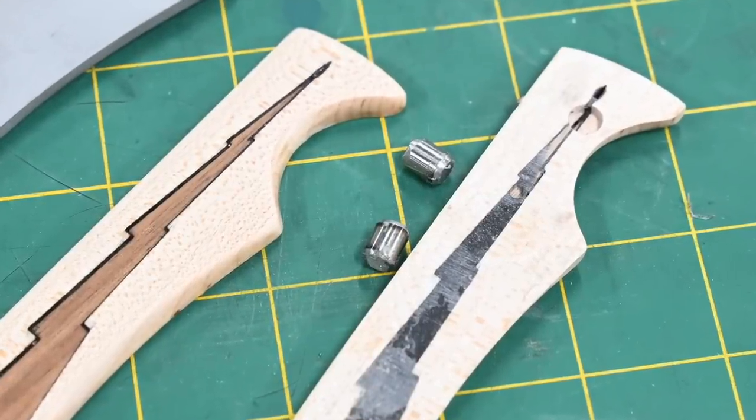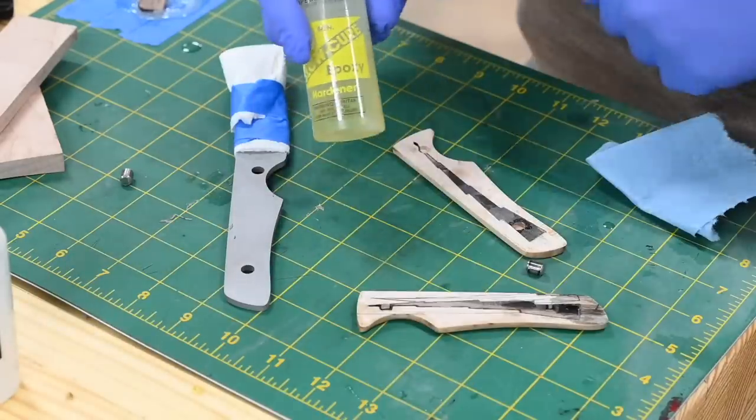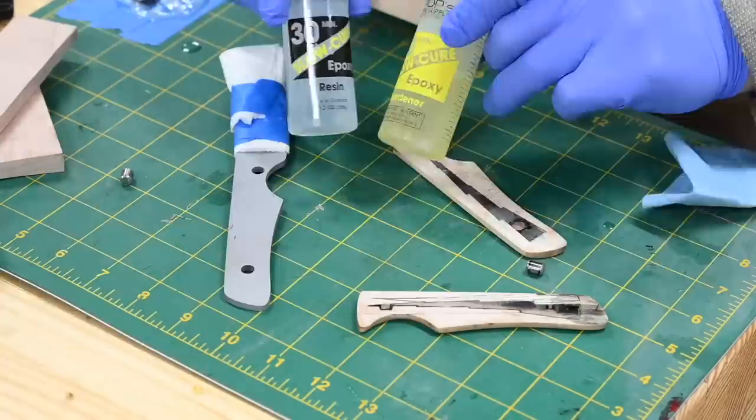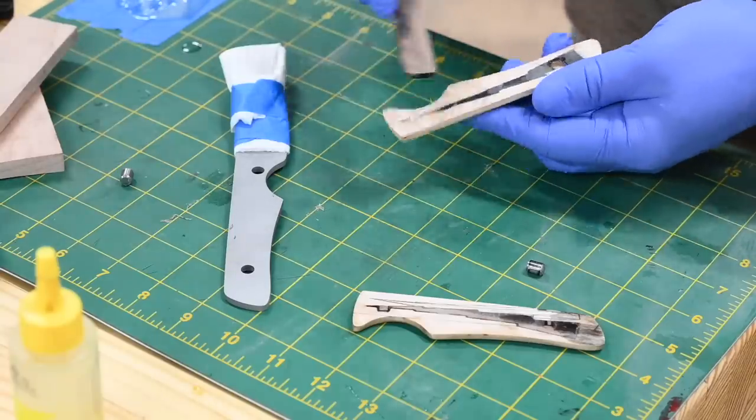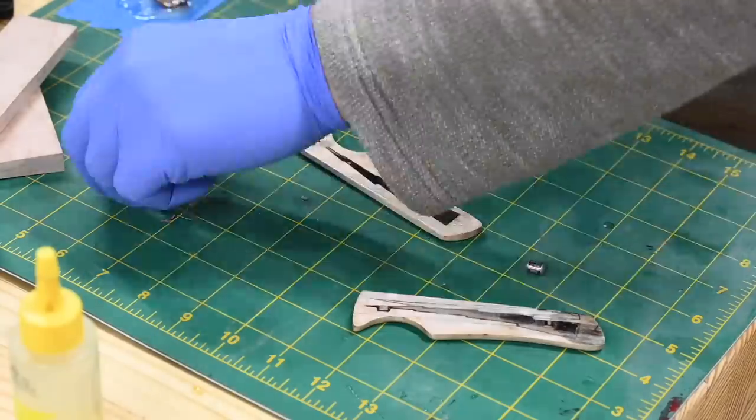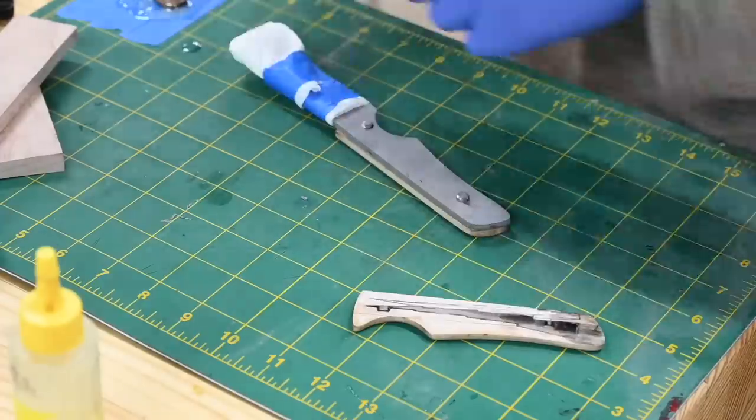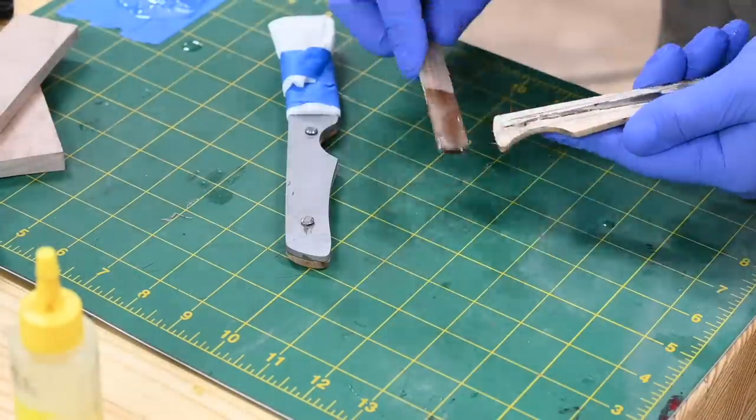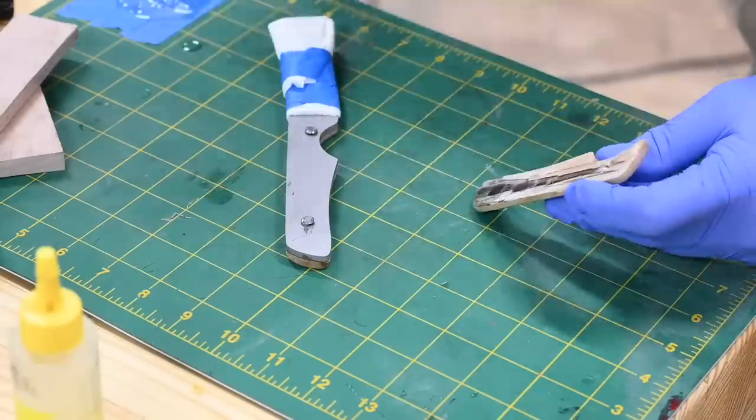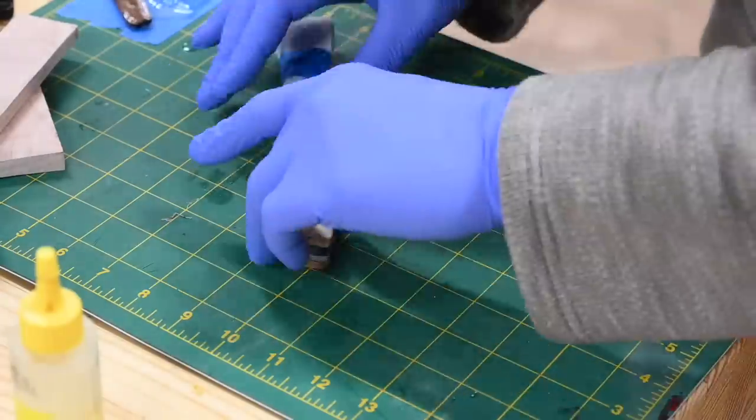Then back out to the shop and we'll epoxy the scales on. Now is an internal pin system as robust as screws or peen pins or something like that? Well, obviously not, but this isn't the sort of knife that's intended for you to take out into the Amazon for your four-month solo survival trip. For casual use, this thing will last forever.